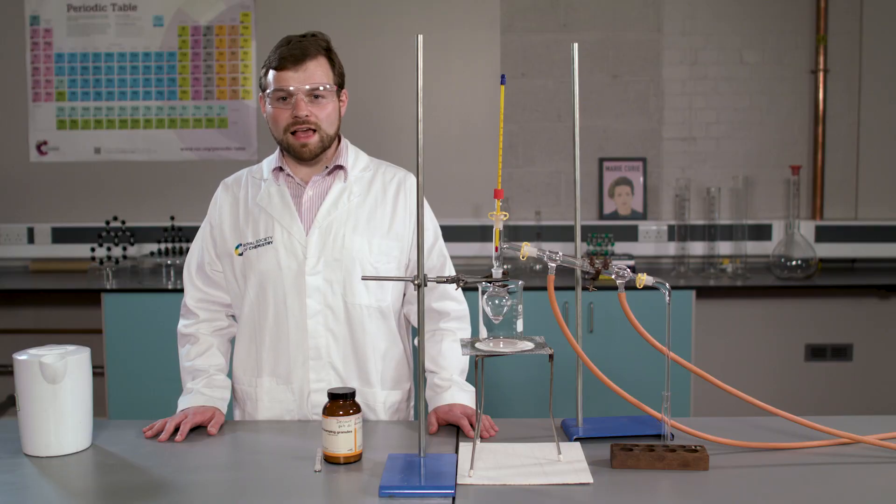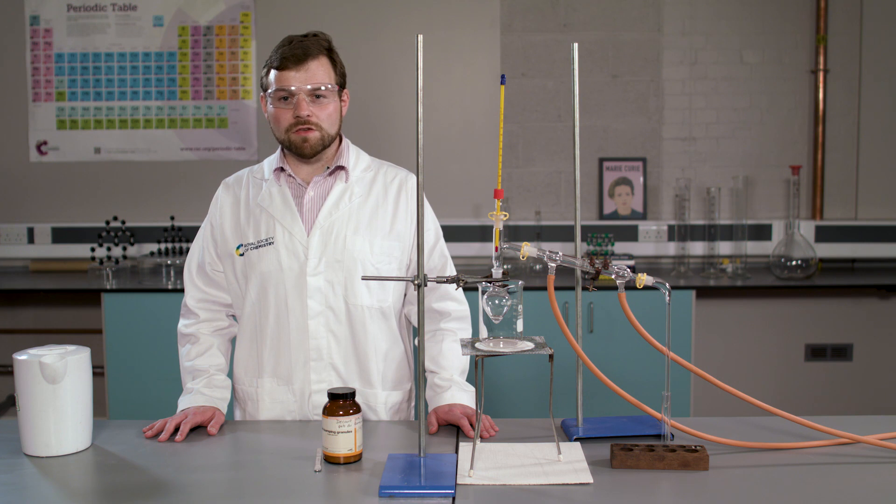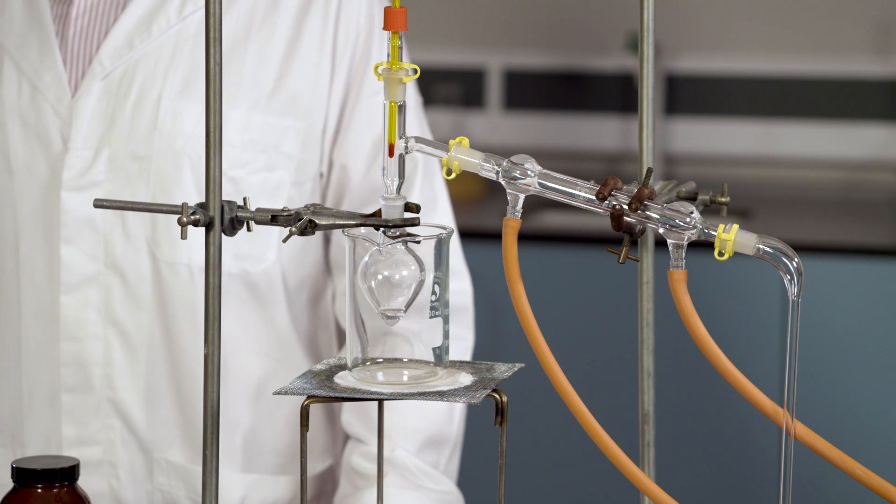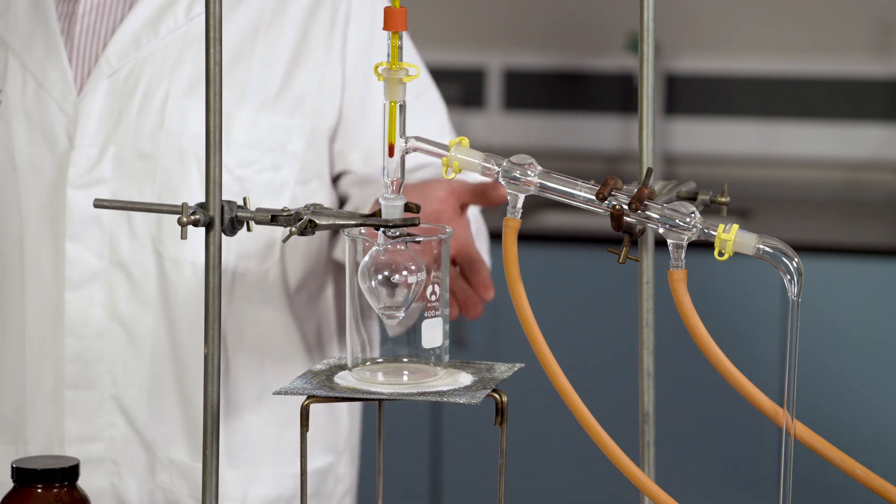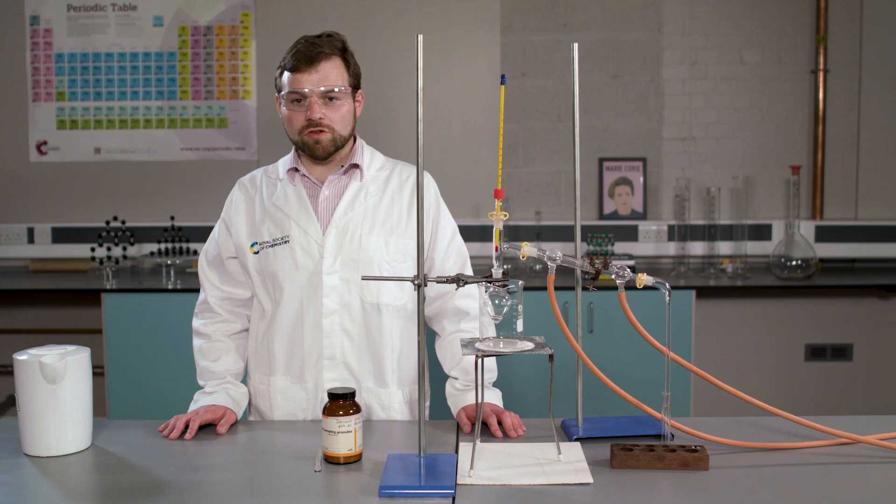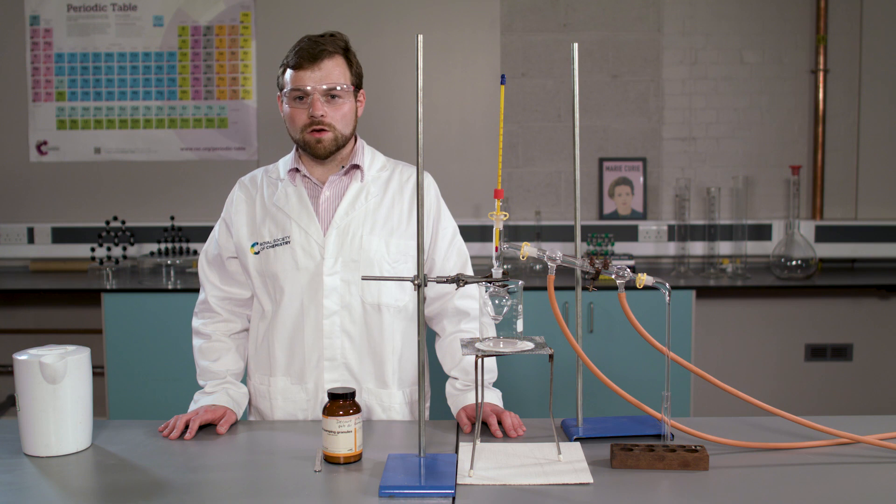Now we have removed the excess acid and water from our organic product. However, there may still be some unreacted reactant or organic by-product that remains. Therefore, we are going to purify our organic product further using distillation. Here I have our organic product from our filtration step and I have added some antibumping granules to the flask. The product we are making in this reaction is 2-chloro-2-methylpropane, which has a boiling point of 51 degrees Celsius.